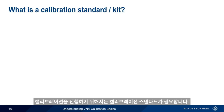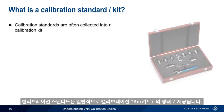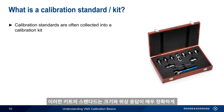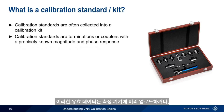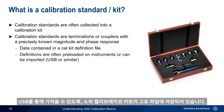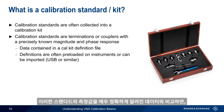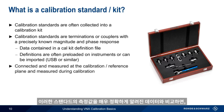In order to perform a calibration, we need calibration standards. Calibration standards are usually delivered in the form of a calibration kit. The calibration standards in a kit are terminations or couplers with very precisely known magnitude and phase responses. In other words, we know what results we should get when we use them. This well-known response state is recorded in a so-called calibration kit definition file, which are often preloaded on an instrument or can be imported, for example, via USB. If we compare our measurements of these standards to their very precisely known values, we can quantify the magnitude and phase errors introduced by our VNA and by our measurement setup.